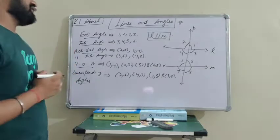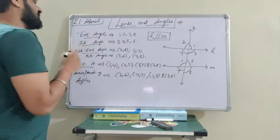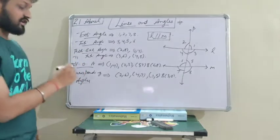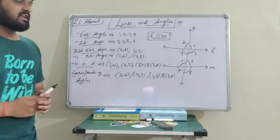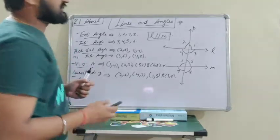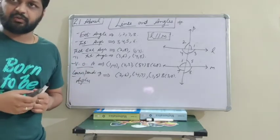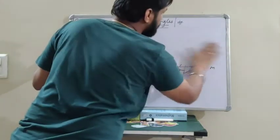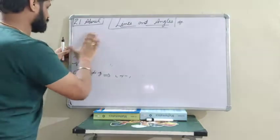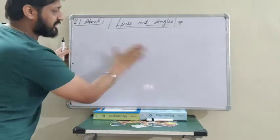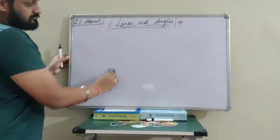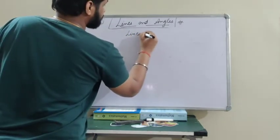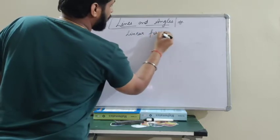So these are the following pairs of angles we have discussed: exterior angle, interior angle, alternate exterior, alternate interior, vertically opposite angles, and corresponding pair of angles. Now let's start the next topic — what do you mean by linear pair and how we will use it in equations. The concept of linear pair.